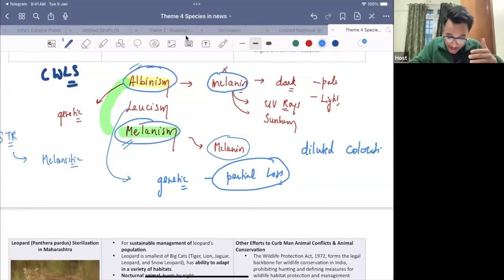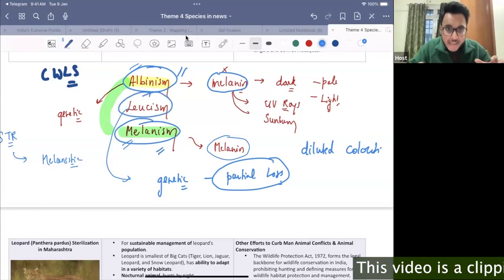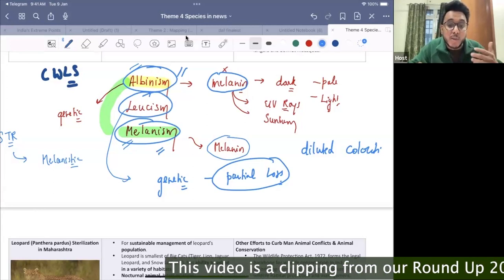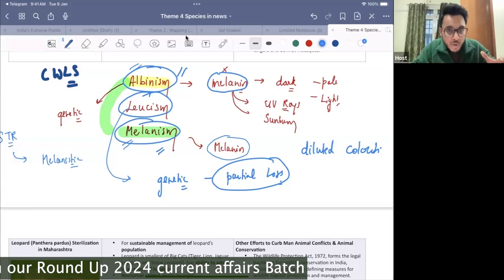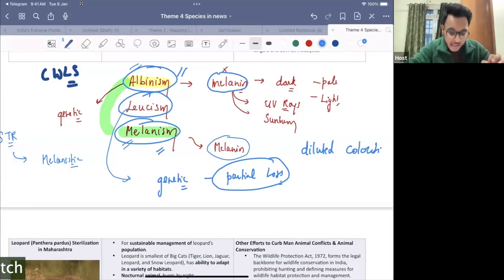Now, if just we paraphrase, albinism is the absence of melanin. Melanism is too much of melanin. And in between is the leucism, which is the partial loss of certain pigments, which can include melanin and can include the other pigments also. So, because of that, patchy, diluted, discolored fur, etc. will be there.